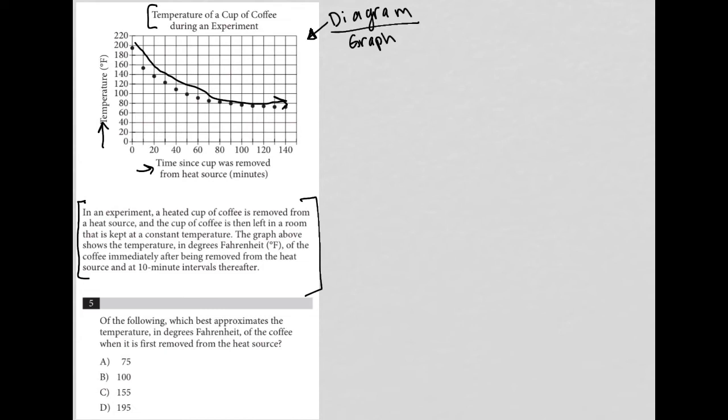So question number five says... First removed from the heat source is here, right? Zero minutes of time since the cup was removed from heat source. That's when it's first removed. So we're up here. This point that we have here is right below 200 degrees Fahrenheit. So the only answer that makes any sense here would be choice D, 195 degrees Fahrenheit.